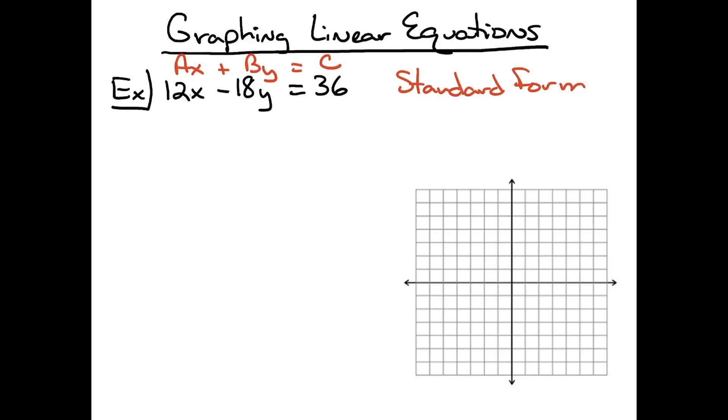With my students, I give them some shortcut formulas for standard form. When it's in standard form, I can find the x-intercept by using the formula c over a. In this particular example, my c is 36 and my a is 12, so I divide 36 by 12 and get 3. So I know that my x-intercept is 3, so I can go to the x-axis and put a dot on 3.